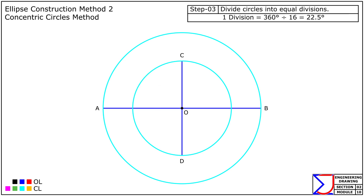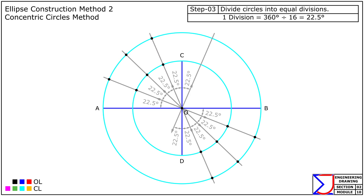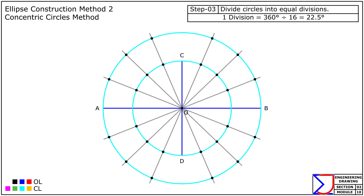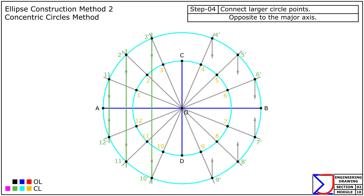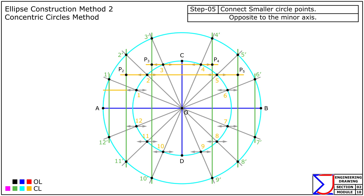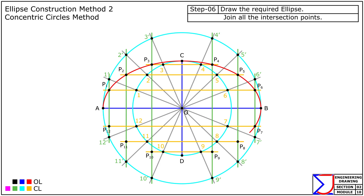Now divide both the larger and smaller circles into an equal number of parts — for example, 16 — and mark the points accordingly as shown. After that, join each point on the larger circle to its opposite point across the major axis. Then join each point on the smaller circle to its opposite point across the minor axis, extending the lines to meet the lines from the larger circle. Finally, connect all the intersection points with a smooth continuous curve to complete the required ellipse.